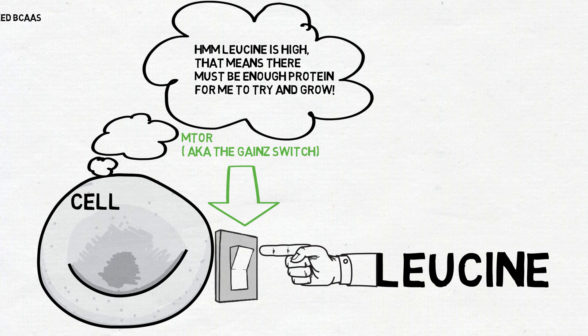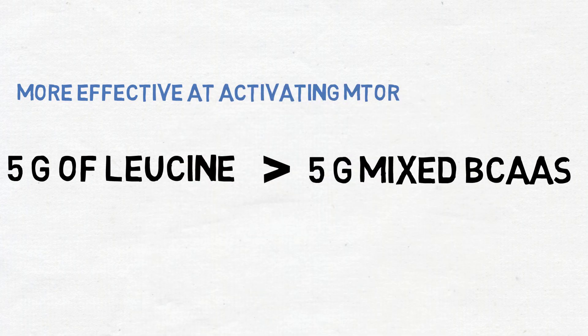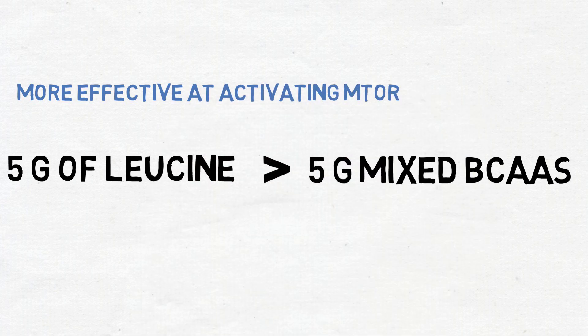While the other two BCAAs do also activate mTOR, they are much weaker than leucine in doing so. As a result of that, five grams of leucine will be more effective than five grams of mixed BCAAs.